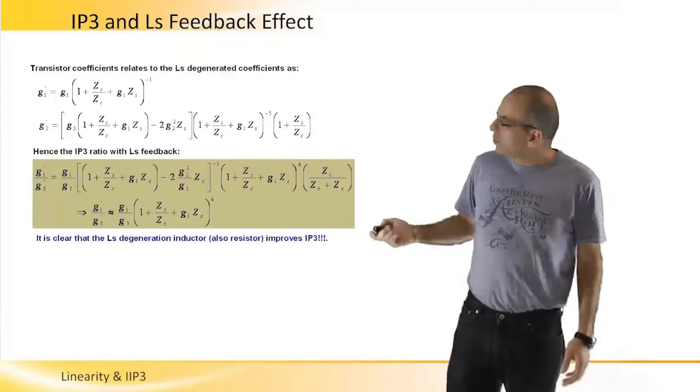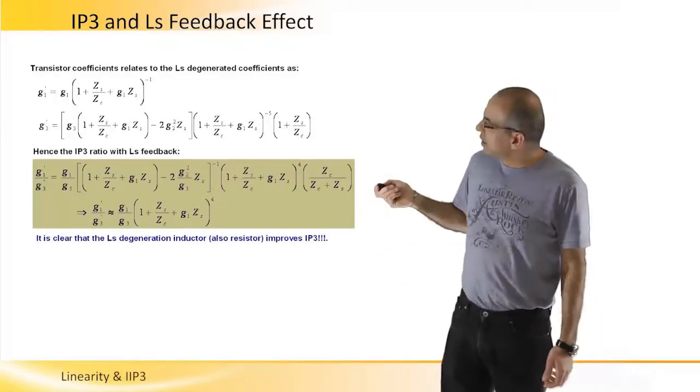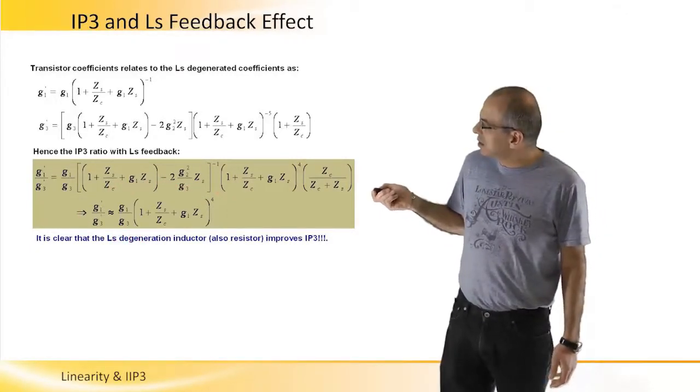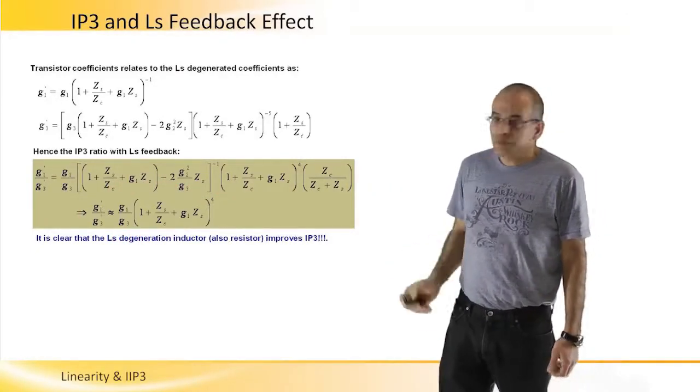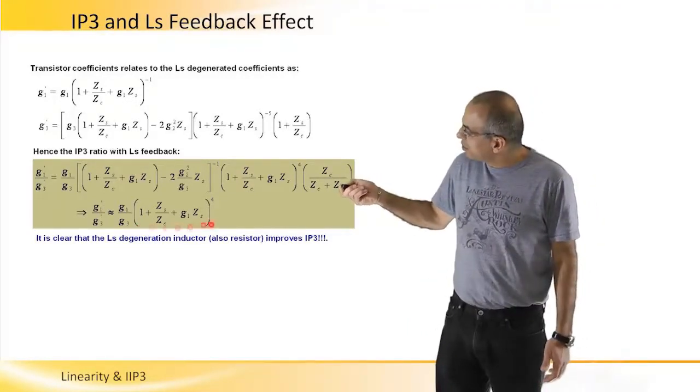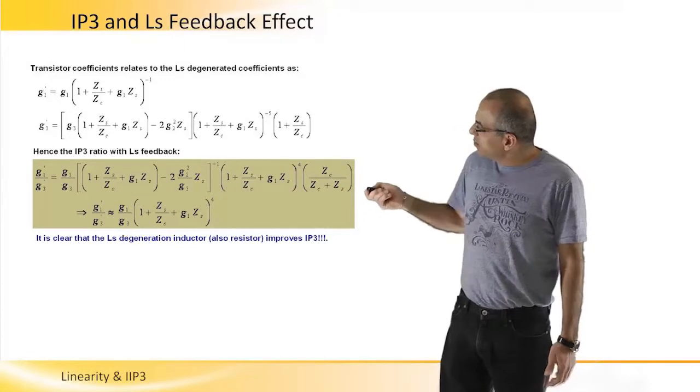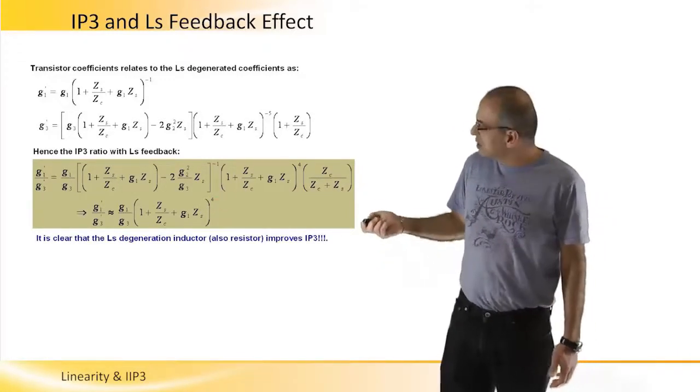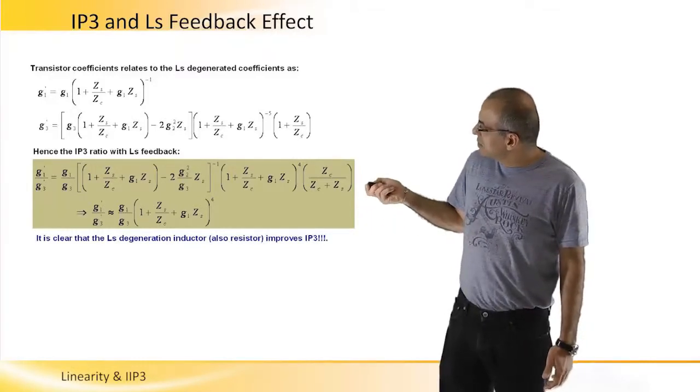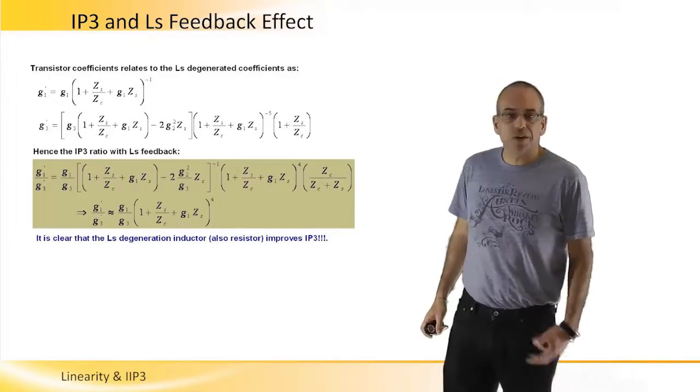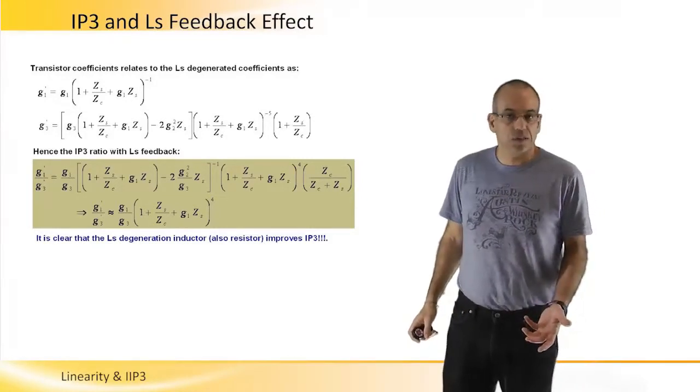So if we do that, we find that it is the original ratio between G1 over G3 multiplied by this long term. However, with some simplifications and very reasonable assumptions, we can see that it simplifies to be this term multiplied by the original ratio. And because it's to the fourth term, we can see very easily that linearity of the LNA is really improved by introducing the source inductance.